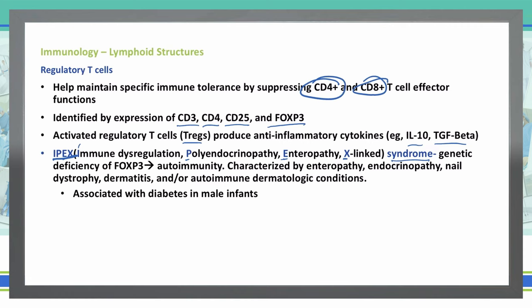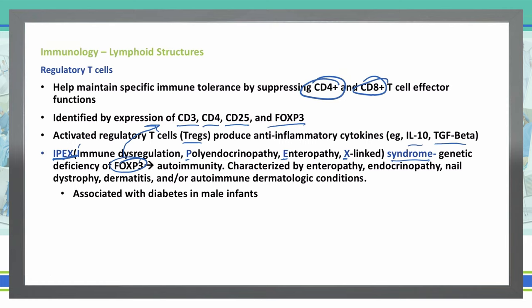IPEX syndrome represents a genetic deficiency of FOXP3, which, as mentioned earlier, is the marker used to identify regulatory T cells. This deficiency conveys a state of autoimmunity.